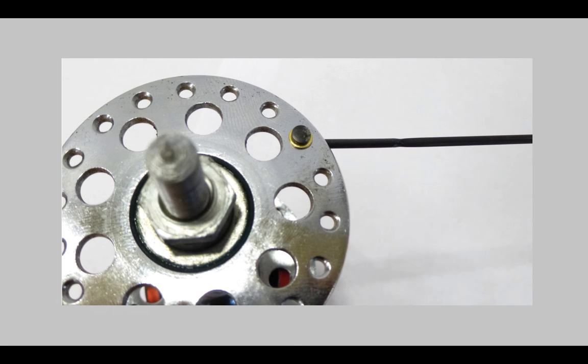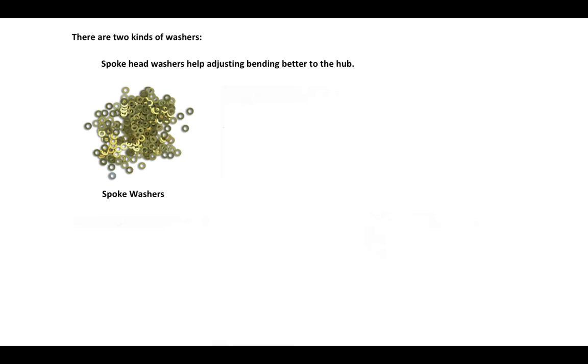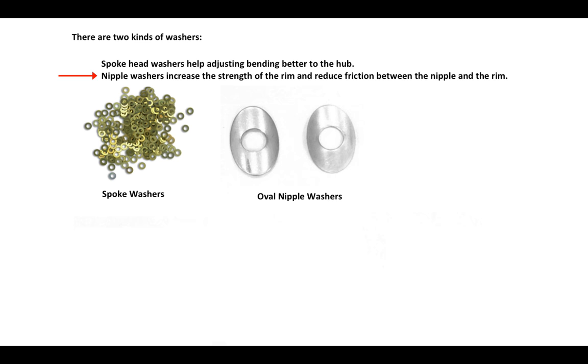We see a better picture here. The other type of washer is a nipple washer which will increase the strength of the rim and also reduce friction between the nipple and the rim. The first example is oval nipple washers.